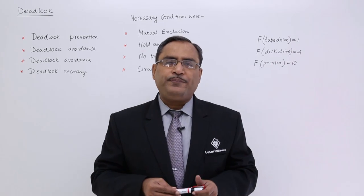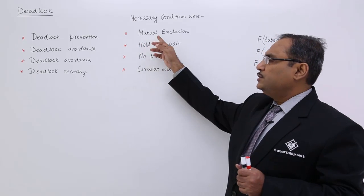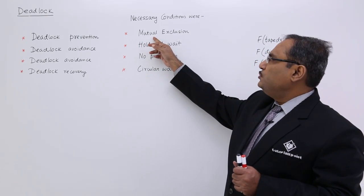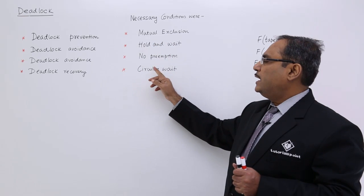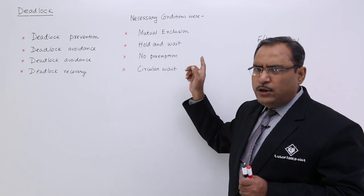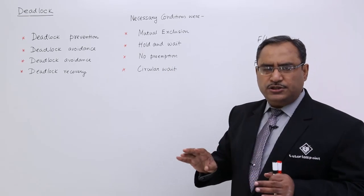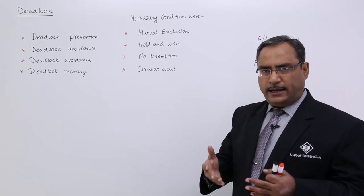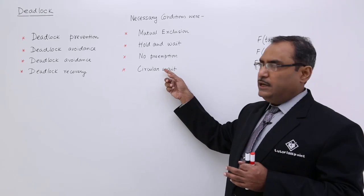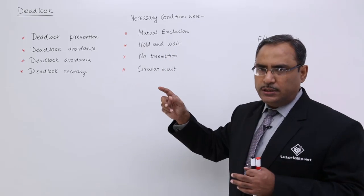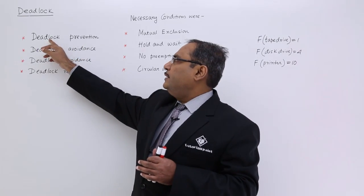What is deadlock prevention? There are four necessary conditions for the occurrence of deadlock: one is mutual exclusion, another one is hold and wait, another one is no preemption, and another one is circular wait. If we can find a solution for any one of them, the deadlock situation will not take place for that particular cause. If we can find solutions for each and every necessary condition, that comes under the head of deadlock prevention.